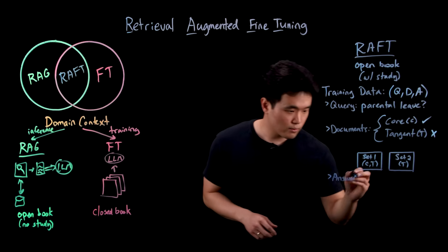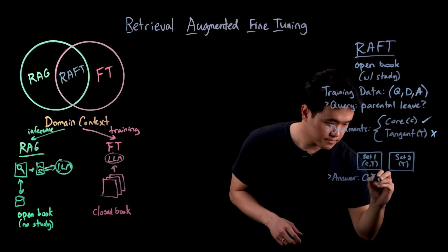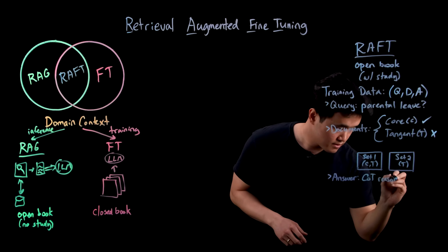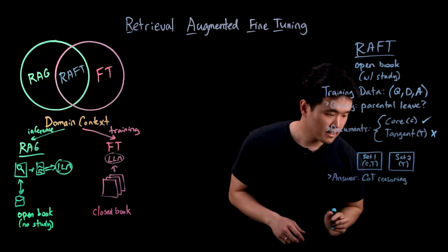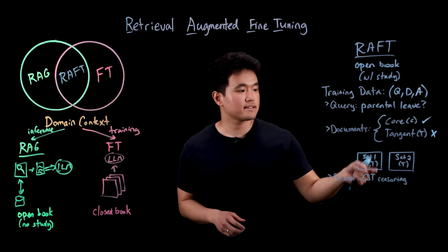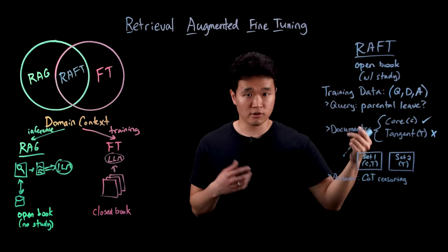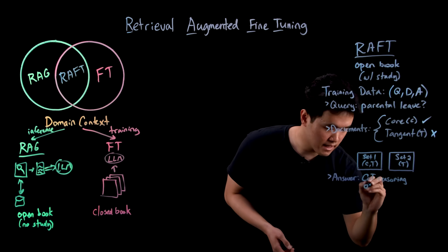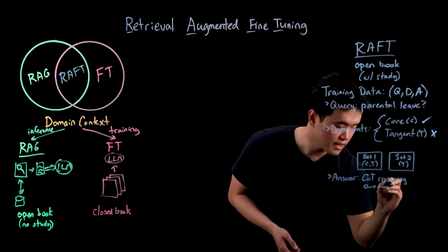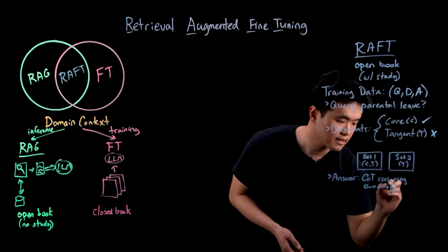Finally, to generate our answer, we use chain of thought reasoning to teach the model how to filter past tangent documents and focus on and process through core ones step-by-step in order to generate a correct answer.